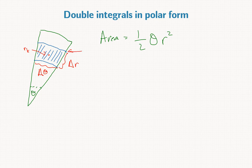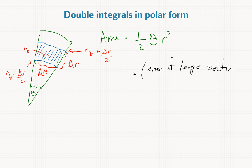These points up here, this will be r_k plus delta r over 2, and the bottom one will be r_k minus delta r over 2. We can calculate the area as the area of the large sector minus area of the small sector.